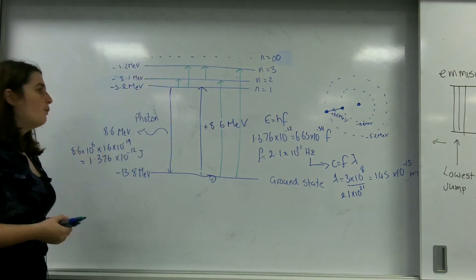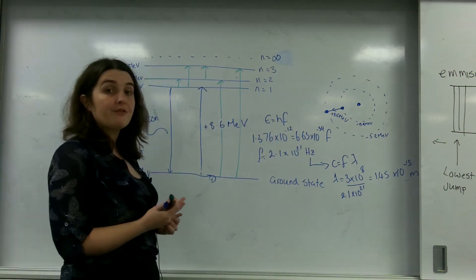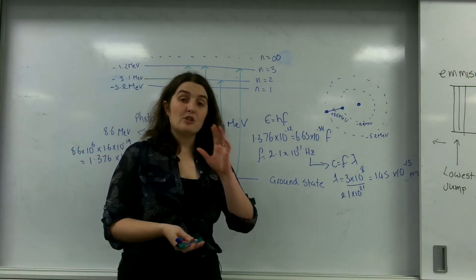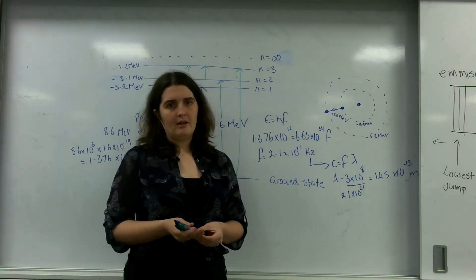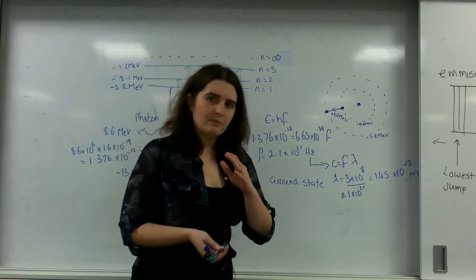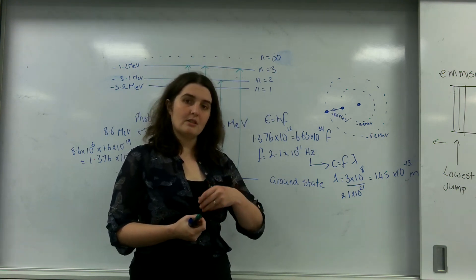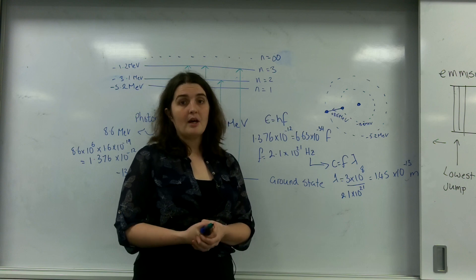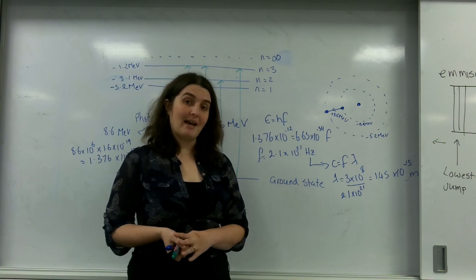We are able to work out the composition of different stars by these atomic line spectra. And it gets much further into astrophysics where you can actually use this to start classifying stars by how much of certain elements they contain.